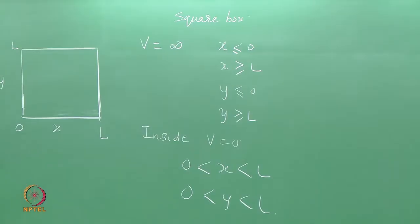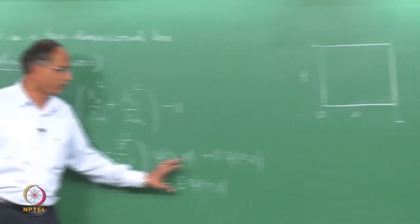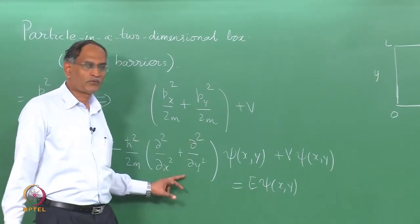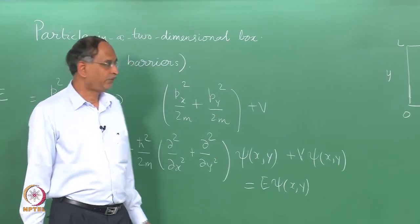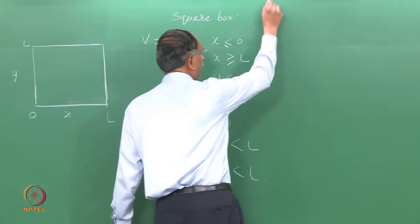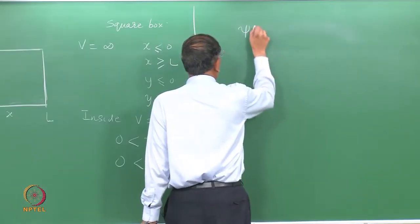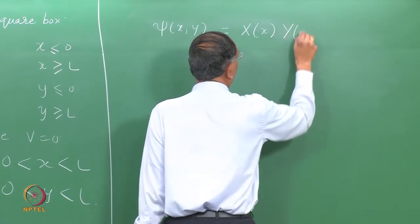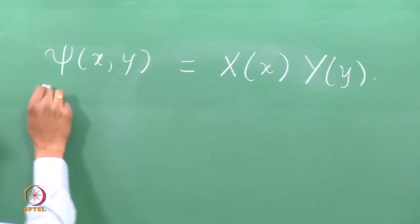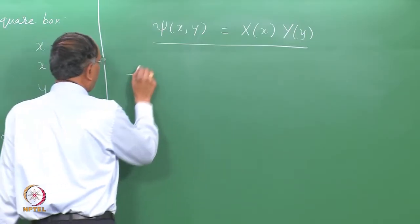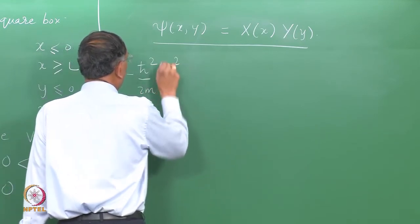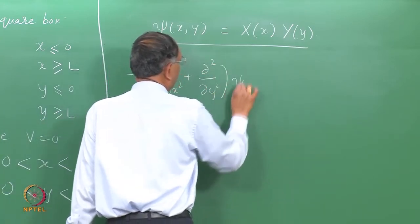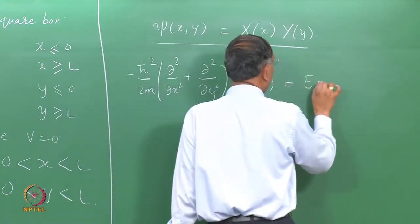The differential equation simplifies without the potential term. You have a second derivative in one direction and a second derivative in another direction acting on psi(x,y). The equation becomes: −ℏ²/2m · (∂²/∂x² + ∂²/∂y²) · psi(x,y) = E · psi(x,y).